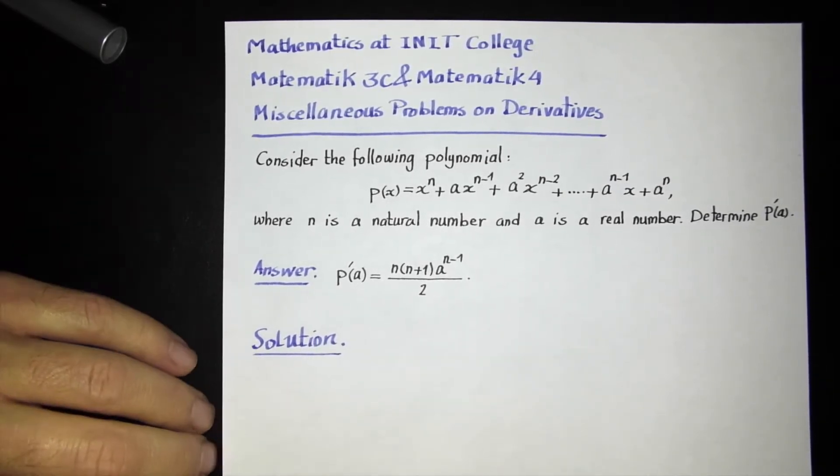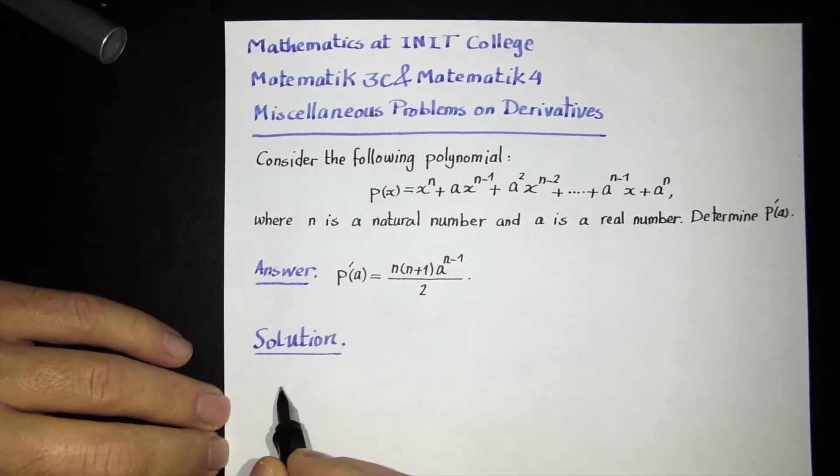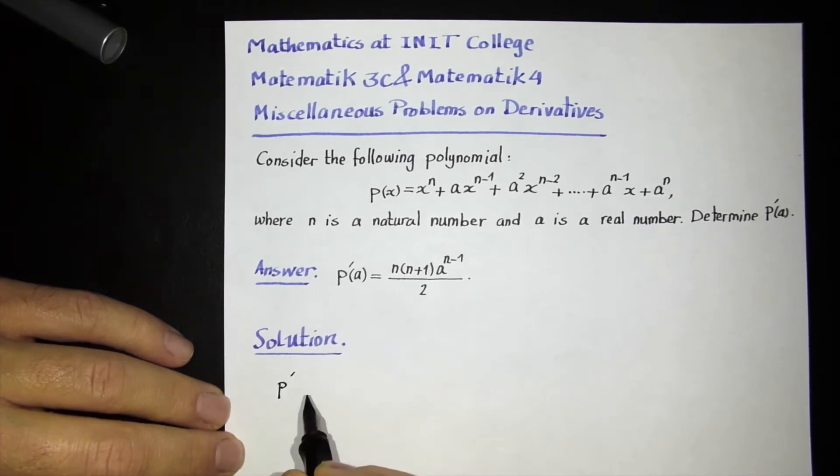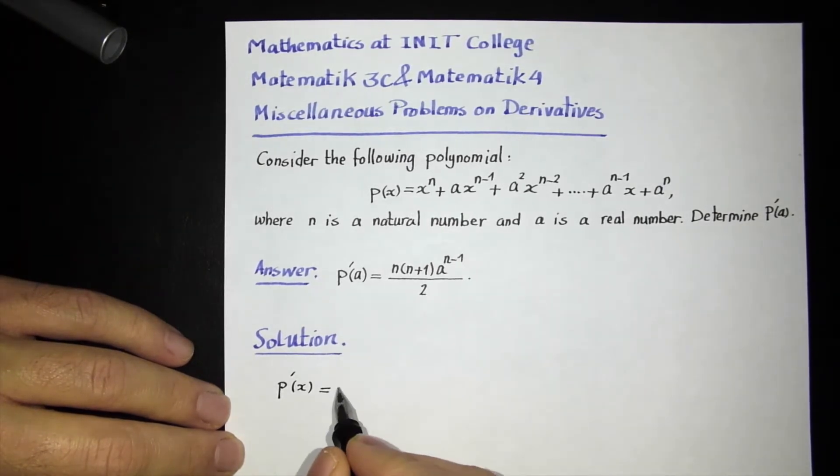The first thing I want to do is differentiate my function. This is a polynomial function, so differentiating it is very simple. P'(x) equals, here I have this first term, the derivative of this is simply n times x to the n minus 1.